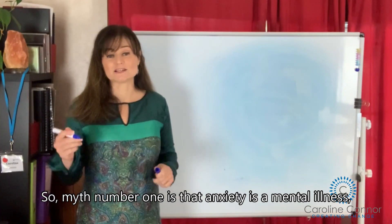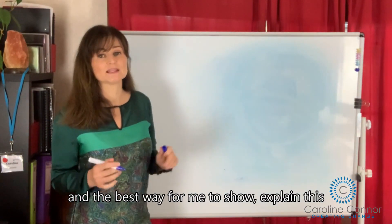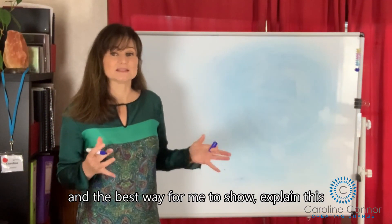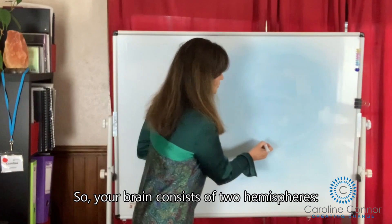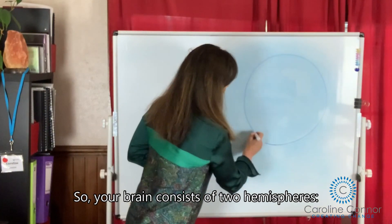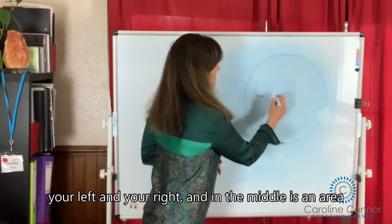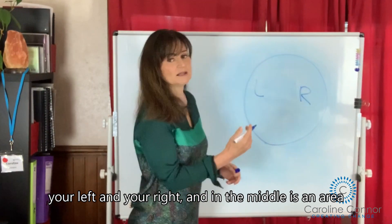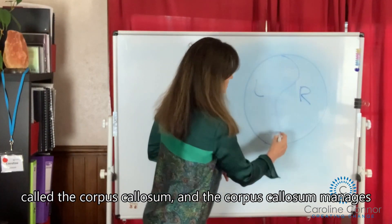So myth number one is that anxiety is a mental illness. And the best way for me to explain this is to show you. So your brain consists of two hemispheres, your left and your right. And in the middle is an area called the corpus callosum.